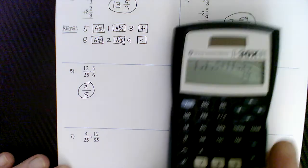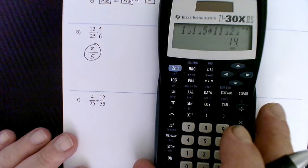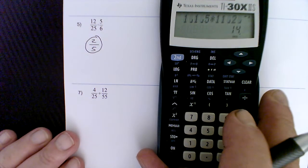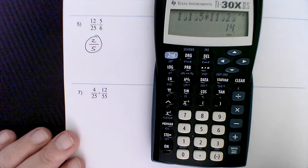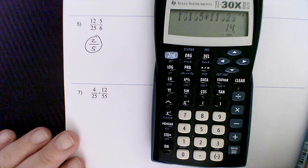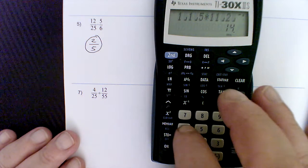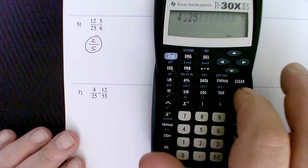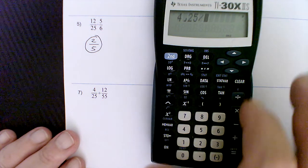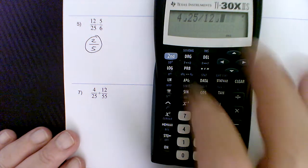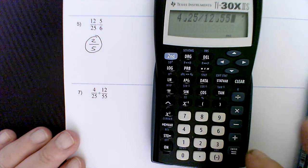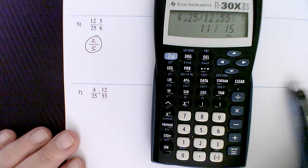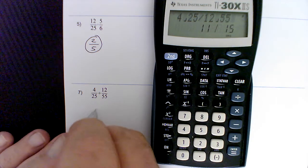And the last two are division problems. And again, keystroke should be pretty straightforward here. So just run through them, practice these, make sure you know how to do it. So 4 fraction key, 25. Now I'm dividing. So divided by 12 fraction key, 55. Press enter. And we get 11 15ths.